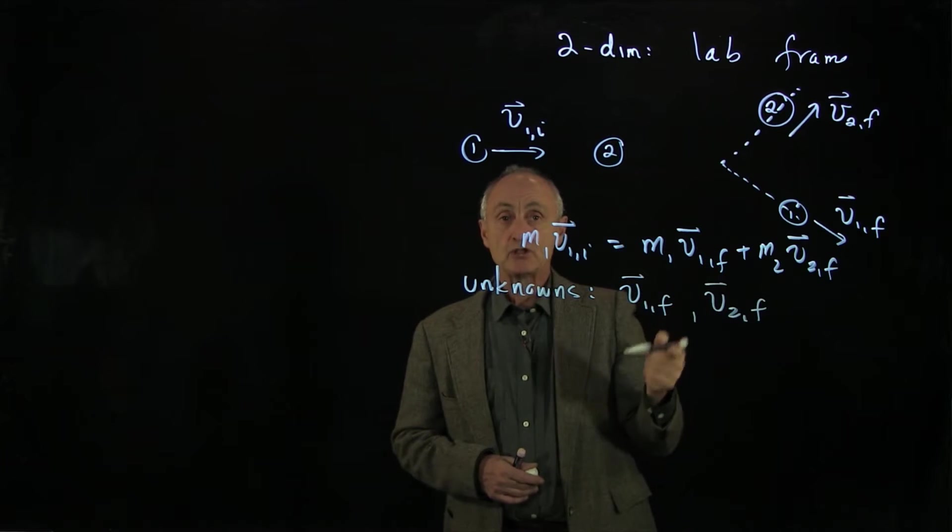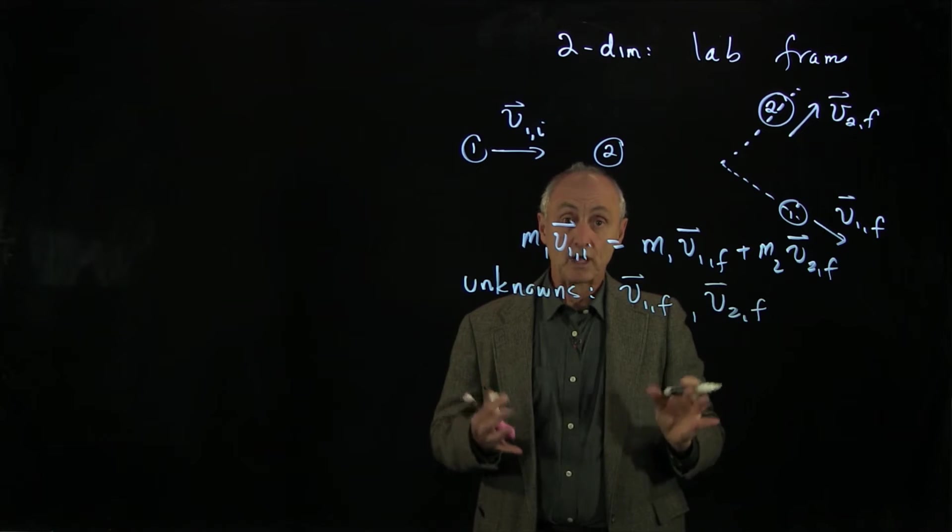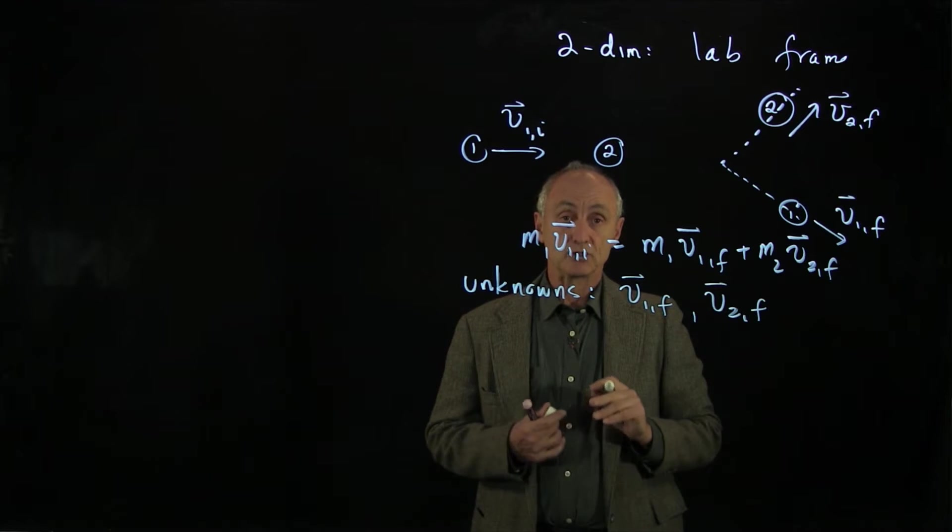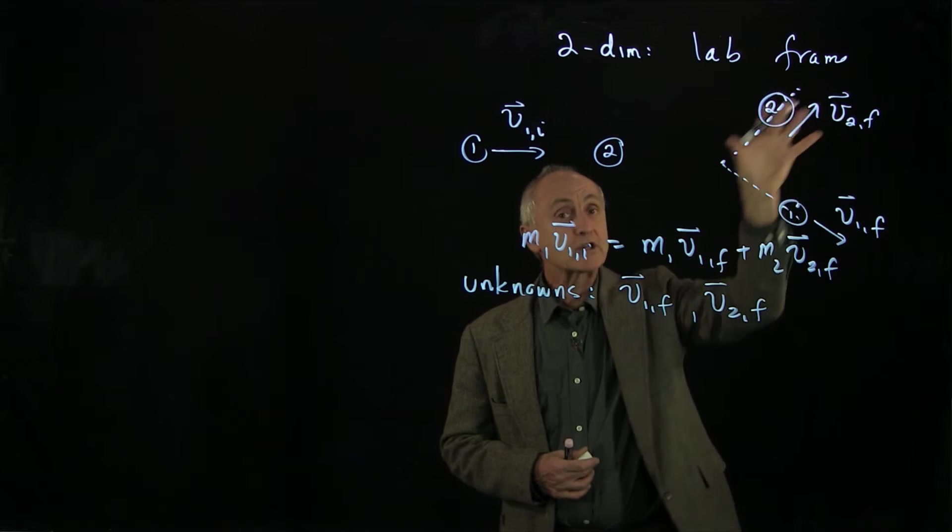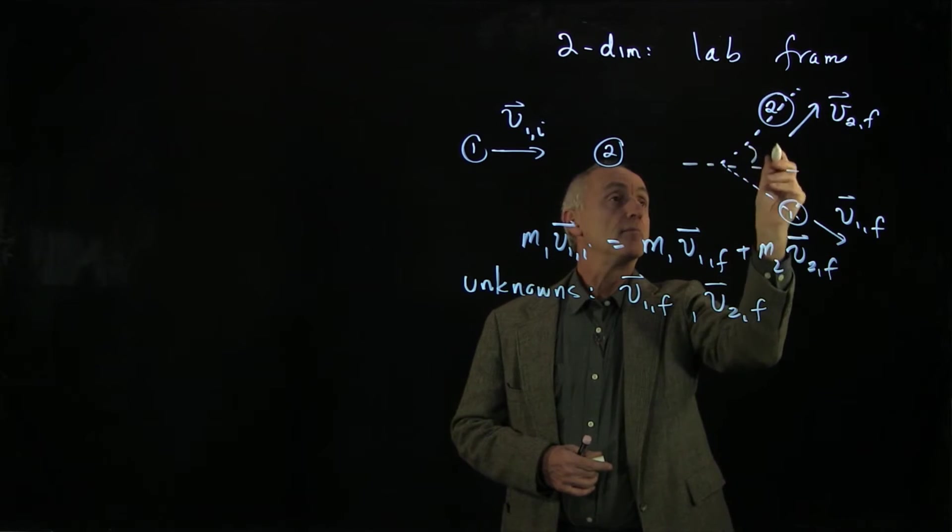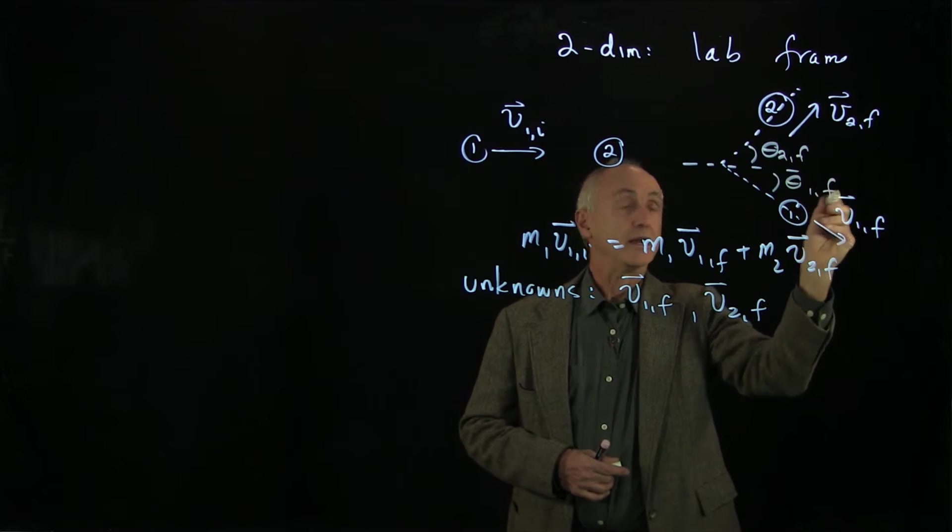And a vector in two dimensions has two quantities. We can write that as components, or we can write it in terms of magnitudes and directions. Now, experimentally, we often will measure the directions of the outcoming particles, which I will now indicate by theta 2 final and theta 1 final.